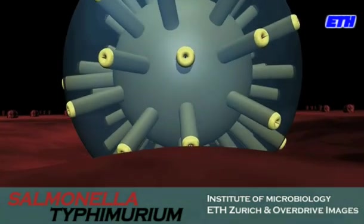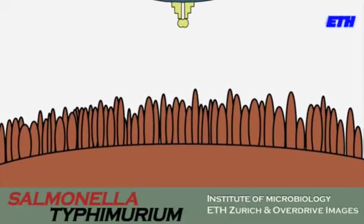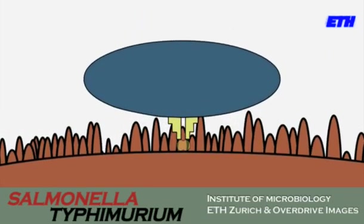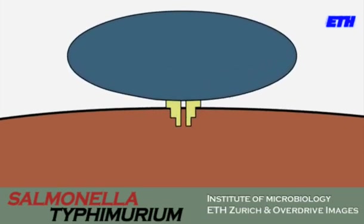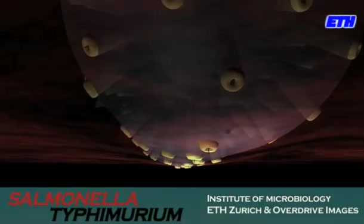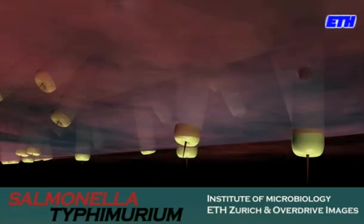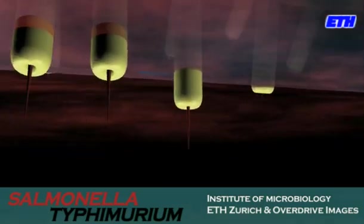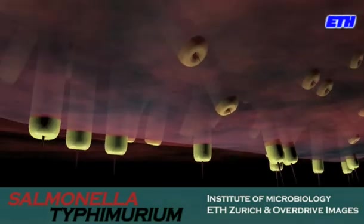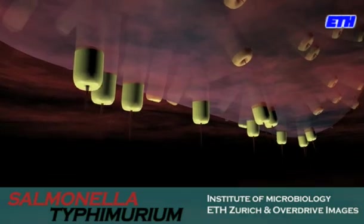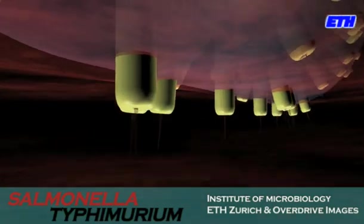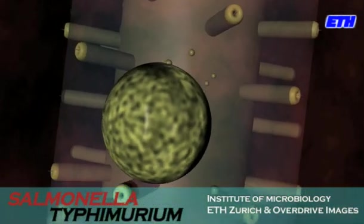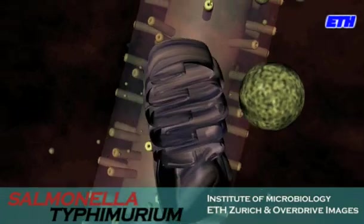Once Salmonella has attached to the surface, it now starts to invade into the interior of these cells. The bacteria use a specialized needle-like organelle, a type 3 secretion system, to deliver its toxins directly into the intestinal host cells. This system functions like a molecular syringe, which starts to inject the Salmonella toxins as soon as it gets in contact with the host cell's surface.